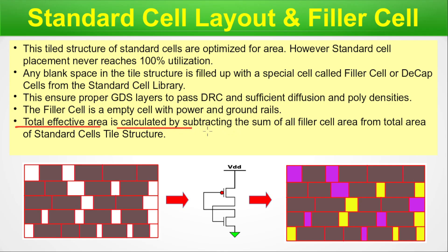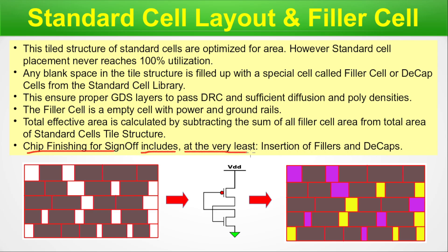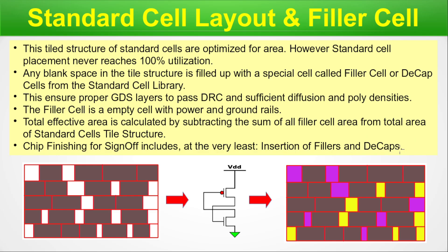The total effective area is calculated by subtracting the sum of all filler cell areas from the total area of the standard cell tile structure. You can see visually how much area the pink filler cells and yellow decap cells cover — the tools can calculate this for you automatically. Keep in mind that design sign-off includes at the very least the insertion of fillers and decaps. Detailed discussion on decaps is available in the decap episode linked in the description and the FAQ playlist.